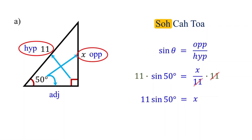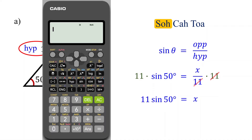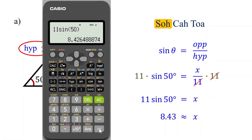To find this product, we need to use a calculator. Please make sure your calculator is in degree mode as the angle is given in degrees. Type in 11 times sine of 50 degrees. So x is approximately equal to 8.43, rounded to the nearest hundredth.